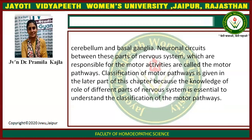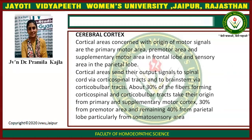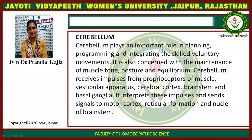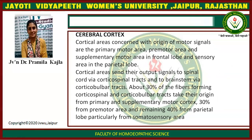Neuronal circuits between these parts of the nervous system which are responsible for motor activities are called motor pathways. Cortical areas concerned with the origin of motor signals are the primary motor area, premotor and supplementary motor area in the frontal lobe, and sensory area in the parietal lobe. The cortical area sends output signals to the spinal cord by the corticospinal tract and to the brainstem by the corticobulbar tract. About 30% of fibers forming the corticospinal and corticobulbar tract originate from primary and supplementary motor cortex, 30% from the premotor area, and the remaining 40% from the parietal lobe, particularly from the somatosensory area.